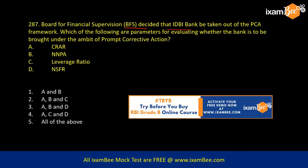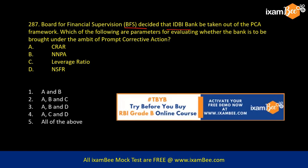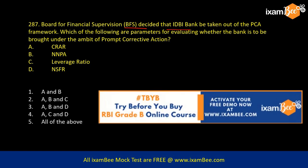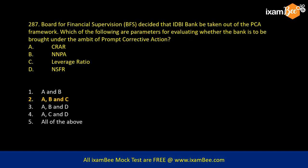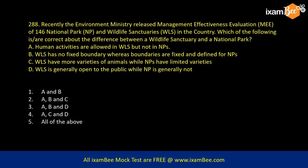The BFS decided that IDBI Bank be taken out of the PCA framework. Which of the following are parameters for evaluating whether a bank is to be brought under the Prompt Corrective Action (PCA) framework? PCA is very important — CRAR, net NPA, and leverage ratio are part of the PCA framework, but NSFR is not. You should know PCA in detail.